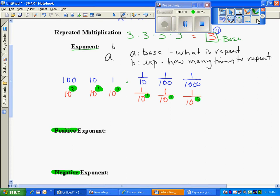So what we want to do is look for a pattern in this, and we're going to have ten to the second, ten to the first, ten to the zero, ten to the negative one, ten to the negative two, and ten to the negative three.